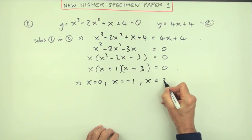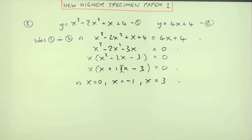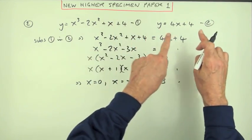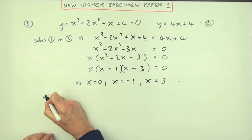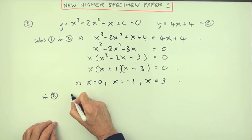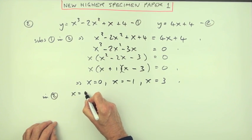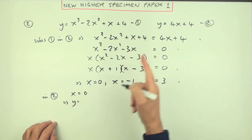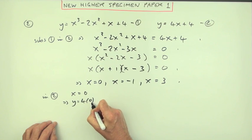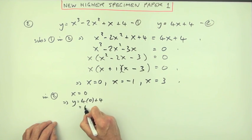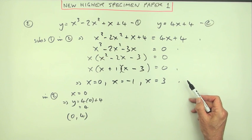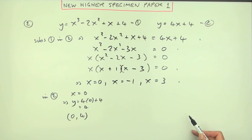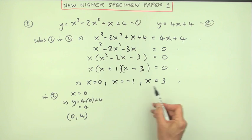Now just find the y coordinates that correspond to them by putting them into either equation - obviously use the simple one. So we'll say by putting them into number two: x equals zero means y equals four times it plus four - four times zero plus four which is four. So that's the point (0, 4). Notice that's four marks, so you'll have to get all three of these correct to get the fifth mark, just like you need to get all three of those correct. x equals negative one - I've not actually got them in the numerical order of the intersections, but that's the way they came out of this factorization.